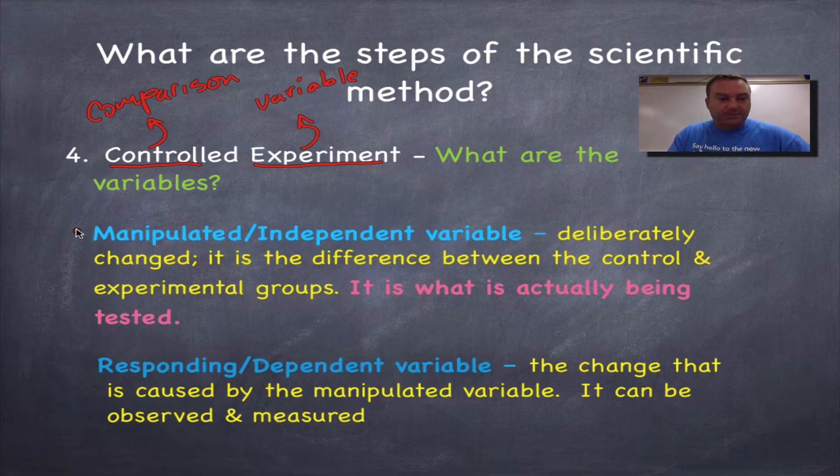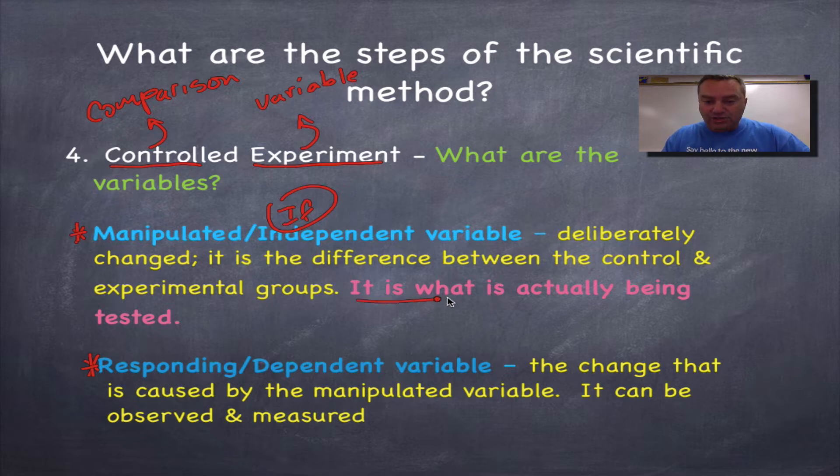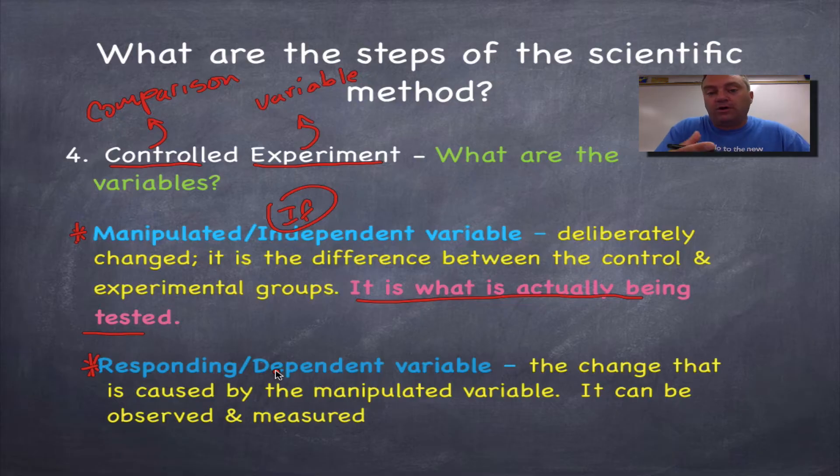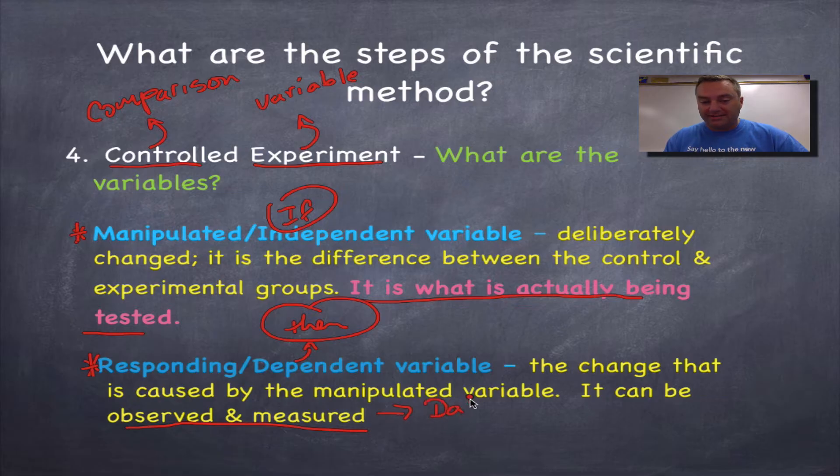Now your variables come in two flavors. The manipulated or independent variable and the responding or dependent variable. The independent variable or the manipulative variable, this is the one you're actually testing. The independent variable is the if part of your hypothesis. Because if I apply this, then something should happen. So this is what's actually being tested. Now the responding variable, that's essentially going to be the data. This is what you observe once the independent variable is being applied. So this would be the then part of your hypothesis. It can be observed and measured. So when you see the word observed and measured, you need to think of data.